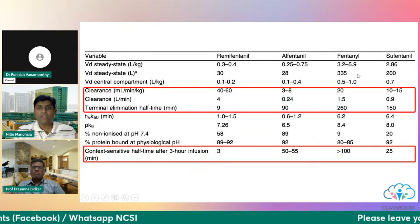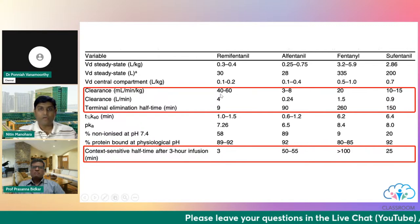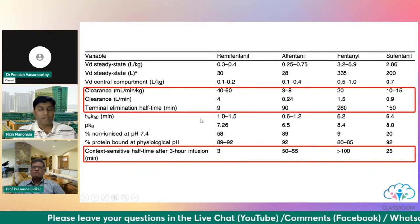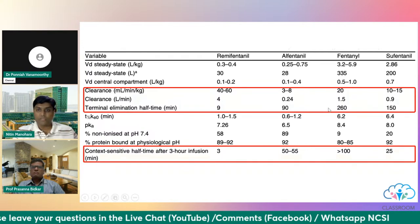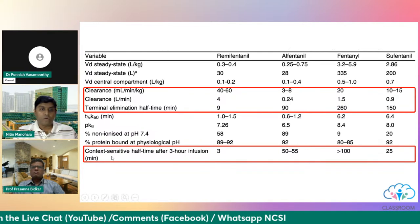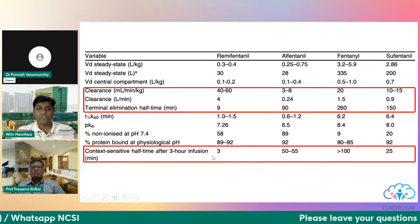Comparing remifentanil to other fentanyl group drugs: clearance is very high at about 40 ml/min/kg, terminal elimination half-life is about 9 minutes, and the context-sensitive half-life even after a 3-hour infusion is only about 3 minutes. This is what makes remifentanil very different from the other opioids.